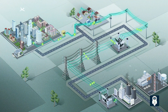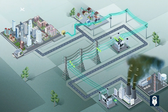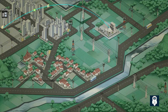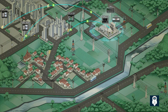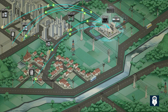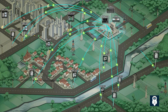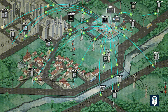Utility companies continually strive to minimize interruptions and reduce the duration of outages. They achieve this through proactive maintenance, upgrading equipment, and implementing smart grid technologies. Smart grid technologies such as advanced sensors and automated control systems enable quicker identification and isolation of faults, leading to faster restoration times.